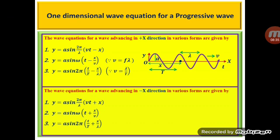If we take 1 by lambda inside the bracket, the equation becomes y equals a sin(2 pi into (v by lambda into t minus x by lambda)). Since v by lambda can be replaced by 1 by T, the equation becomes y equals a sin(2 pi into (t by T minus x by lambda)). To get the wave equation for a progressive wave advancing in the negative x direction, we replace x by minus x in the above relations to get: y equals a sin(2 pi by lambda into (vt plus x)), y equals a sin(omega into (t plus x by v)), and y equals a sin(2 pi into (t by T plus x by lambda)).